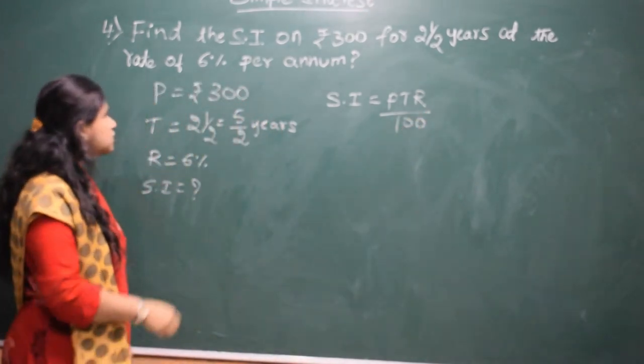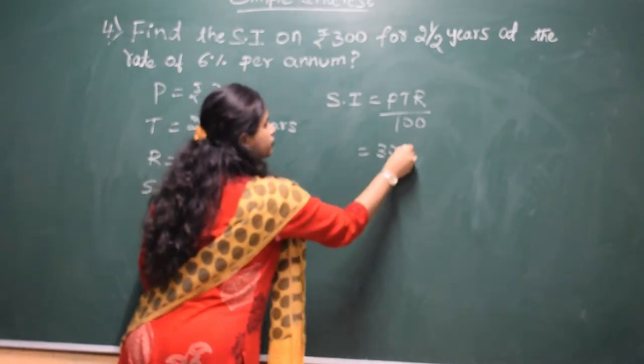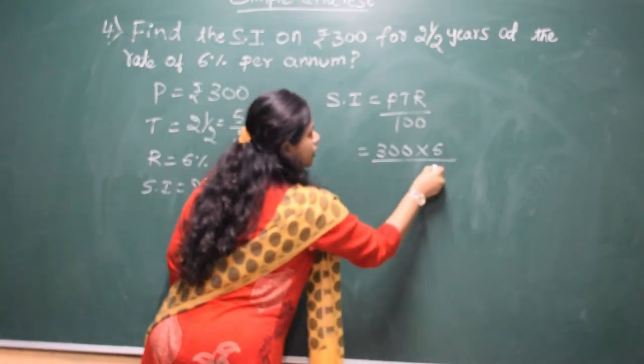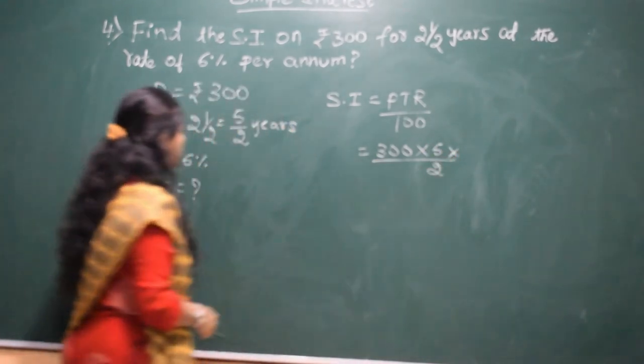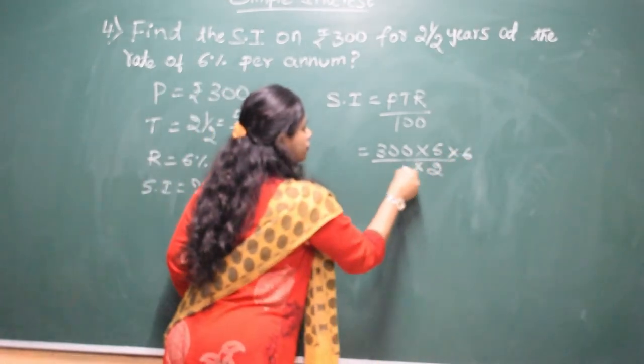Now, what is the principle? Principle is 300. 300 into time. Time, we have to take like this: 5 by 2 into rate is 6%. 6 into 100.